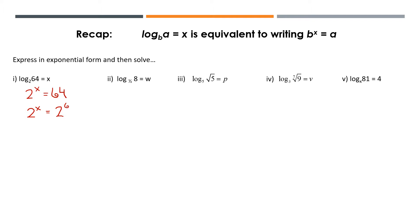Since our bases match, we can kind of ignore them — we're not dividing by 2 or square rooting or anything like that. Because they match, it means that x must equal 6. So we can come to the conclusion that x is equal to 6.